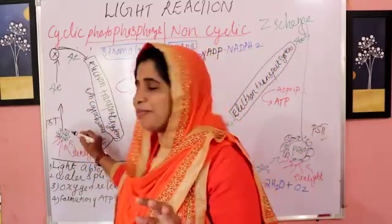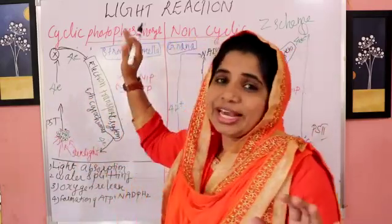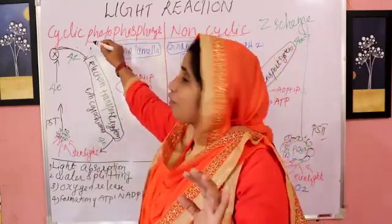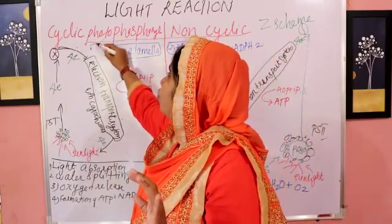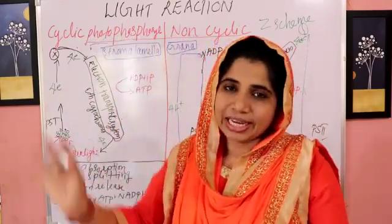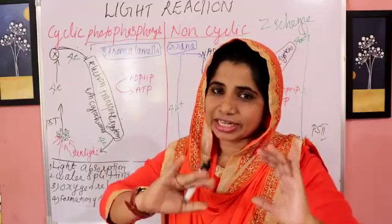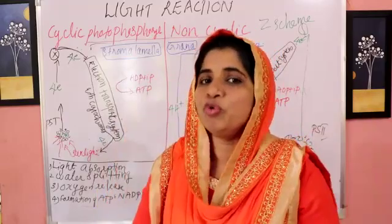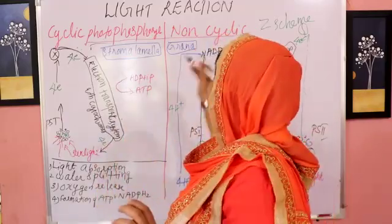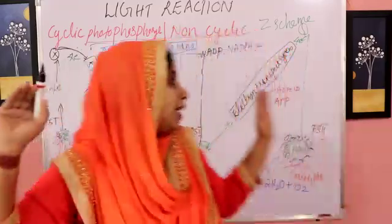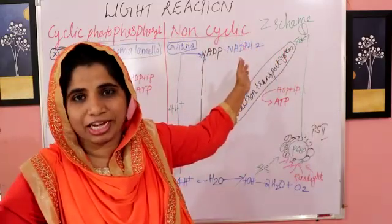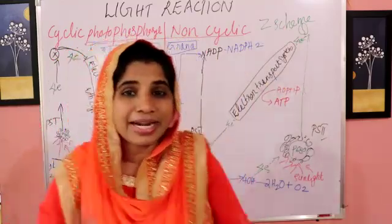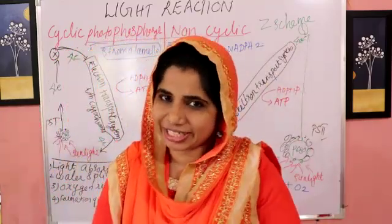There are two types of light reaction. One is cyclic photophosphorylation — that is the cyclic electron transport. The second one is non-cyclic electron transport, the Z scheme. So here are two types of photophosphorylation reactions.